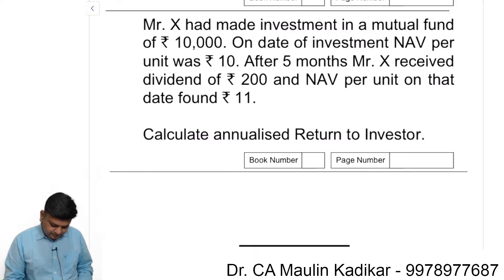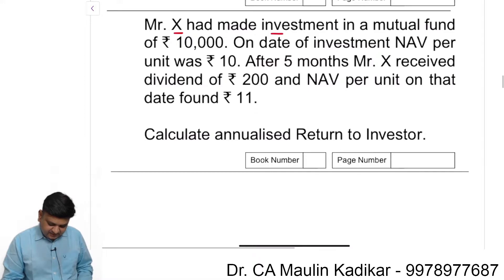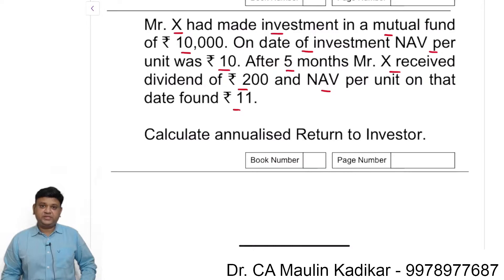Next question. Mr. X had made investment in a mutual fund of ₹10,000. On the date of investment, NAV per unit was ₹10. After 5 months, Mr. X received dividend of ₹200 and NAV per unit on that date found to be ₹11.